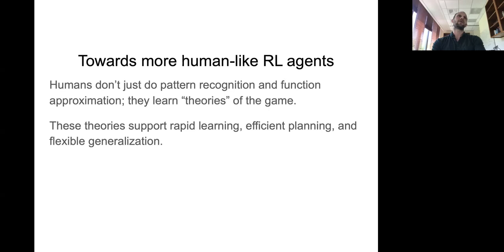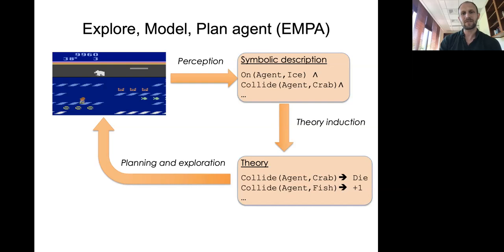I've given you some motivation for why we need to think a little bit differently about how humans solve these kinds of reinforcement learning tasks. Now I want to take more seriously the question of how we would actually build agents that learn in human-like ways. The argument at a high level is that humans don't just do pattern recognition and function approximation. They're learning something like a theory of the game, and these theories support rapid learning, efficient planning, and flexible generalization. So the perspective that I'm trying to argue in favor of here is what we call theory-based reinforcement learning. You could think of it as a kind of model-based reinforcement learning, but where there's fairly strong constraints on the nature of those models. We've built a specific agent that embodies these principles. I should say that it's more of a modeling framework because there are various aspects of this that we're trying to improve and make more scalable. There are lots of ways that you could actually instantiate these ideas, and it consists of basically three steps.